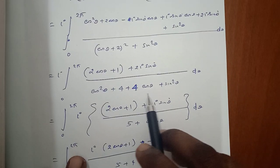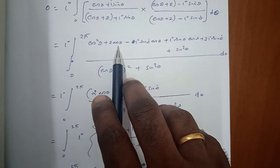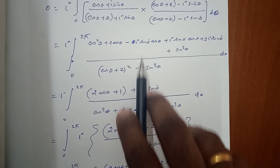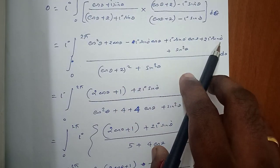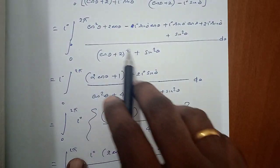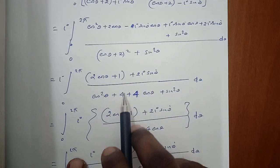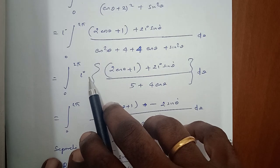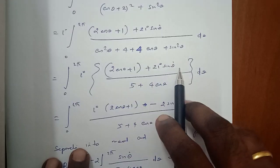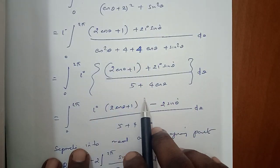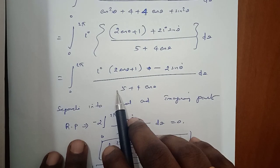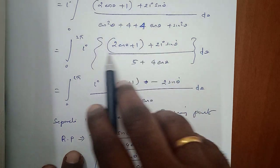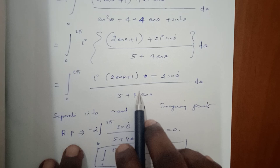Proceeding further, we separate into real and imaginary parts. The real part has sin²θ + cos²θ = 1, so numerator real part becomes 2cosθ + 1. The imaginary terms cancel, leaving 2i sinθ. The denominator using (a + b)² gives cos²θ + 4cosθ + 4 + sin²θ = 5 + 4cosθ. So the expression becomes i·(2cosθ + 1 + 2i sinθ) / (5 + 4cosθ) dθ. Multiplying i inside: i·(2cosθ + 1) + i² ·2sinθ = i(1 + 2cosθ) − 2sinθ, all divided by (5 + 4cosθ).